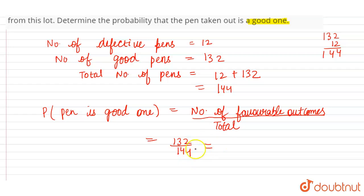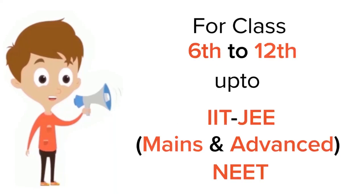Now we'll make this fraction in the simplest form. We can divide it by 6, so 6 into 132 is 22, and 6 into 144 is 24. Then divide by 2, so 2 into 22 is 11, and 2 into 24 is 12. So the probability that the pen is good is 11 by 12.